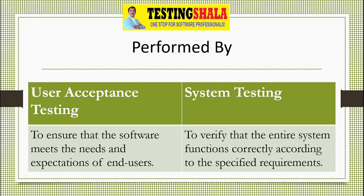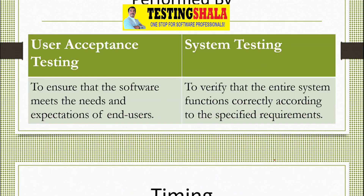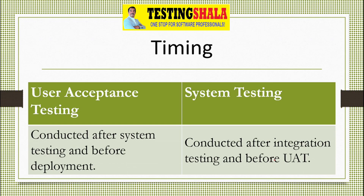The next key difference is: user acceptance testing is normally done by the end user, but system testing will be done by the functional tester or a software tester.